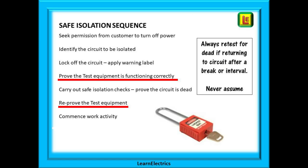There are established procedures for safe isolation that we should follow, and the method shown here is easy to apply. Seek permission from the customer to turn off the power. They may want to turn off the computer or washing machine before you start. Identify the circuit to be isolated. Turn the MCB off. Did the lights go off? If that is the circuit that you are about to work on, then that is correct. Lock off the circuit and apply a warning label. Prove the test equipment is functioning correctly. Carry out the safe isolation checks correctly and prove the circuit is dead. Reprove the test equipment. This is very important and a definite fail if you do not do this during an assessment. And then begin the work activity.